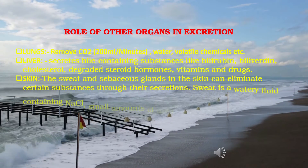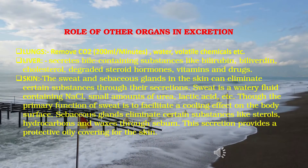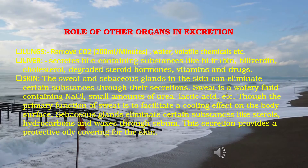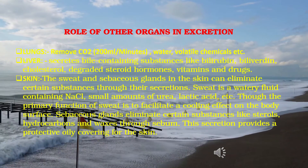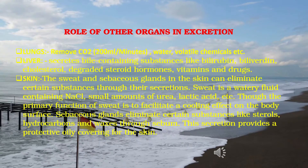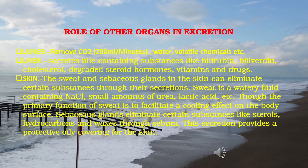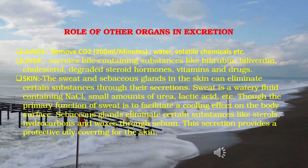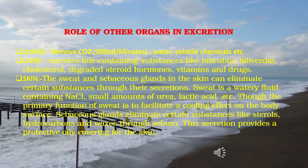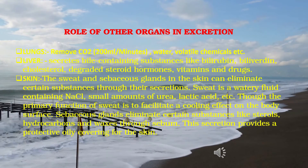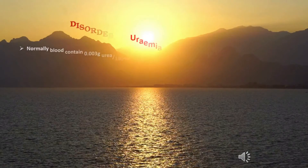Other organs also help in excretion. The lungs remove CO₂ (200 ml per minute), water, and volatile chemicals. The liver secretes bile containing substances like bilirubin, biliverdin, cholesterol, degraded steroid hormones, vitamins, and drugs. The skin has sweat and sebaceous glands: sweat is a watery fluid containing NaCl, small amounts of urea, and lactic acid, primarily functioning to cool the body surface. Sebaceous glands eliminate sterols, hydrocarbons, and waxes through sebum, providing a protective oily covering for the skin.